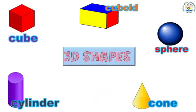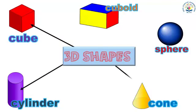Let's revise the shapes once again. Let's repeat together. Which shapes have we learned? We have learned 3D shapes. Let's name them: cube, cylinder, cone, sphere, and cuboid. Students, I hope you enjoyed today's lesson. See you in the next lesson!